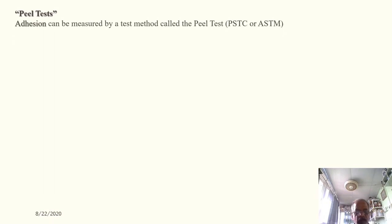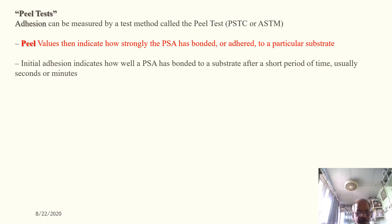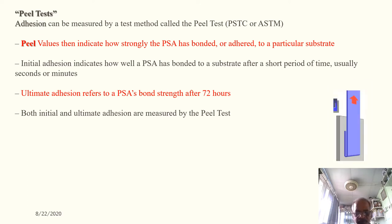Adhesion can be measured by a test method called the peel test, described in PSTC, ASTM, or BIS standards. Peel values indicate how strongly a PSA has bonded to a particular substrate. Initial adhesion indicates how well a PSA has bonded after a short period — usually seconds or minutes. Ultimate adhesion refers to PSA bond strength after 72 hours. Both initial and ultimate adhesion are measured by peel strength.